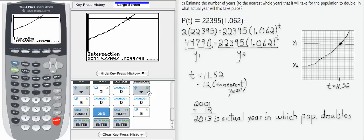If we round that to the nearest whole year, as asked in the directions, we get t is 12 to the nearest year. If we add that to our starting year, which was 2001, plus 12, we get 2013 as the actual year in which the population doubles.